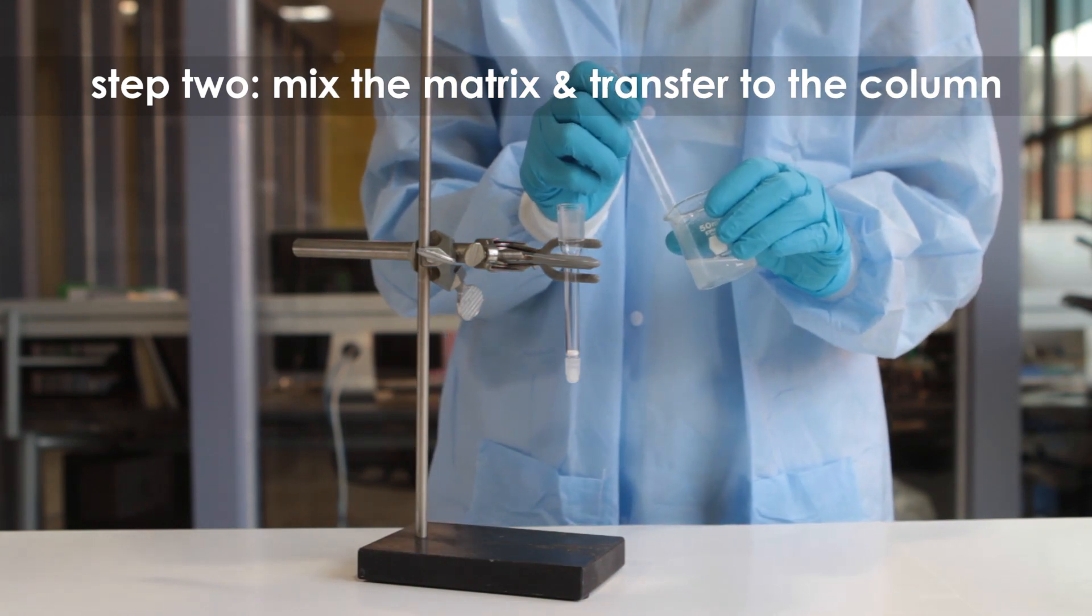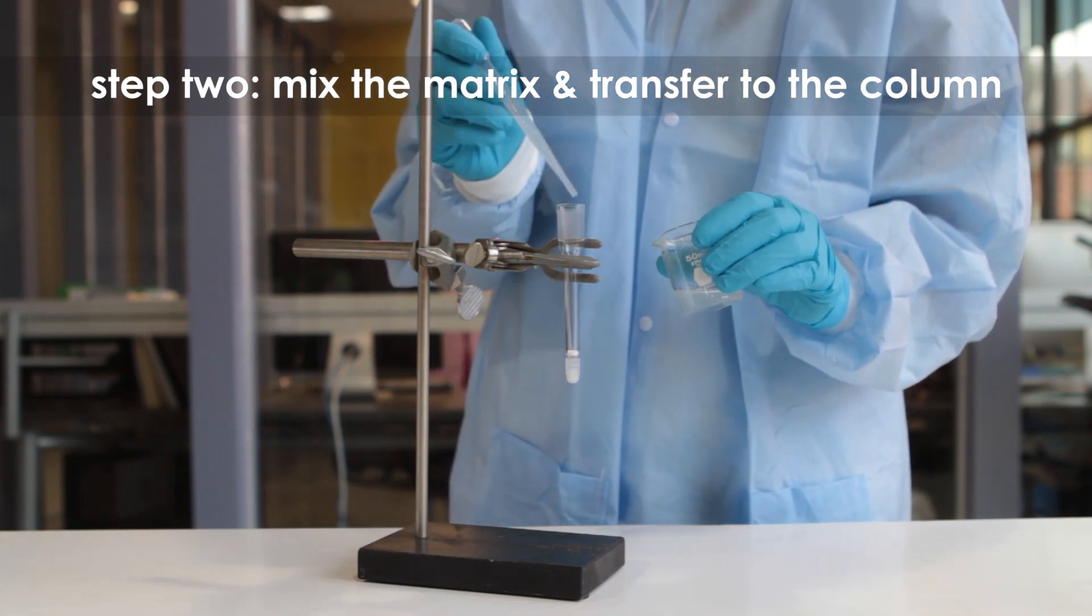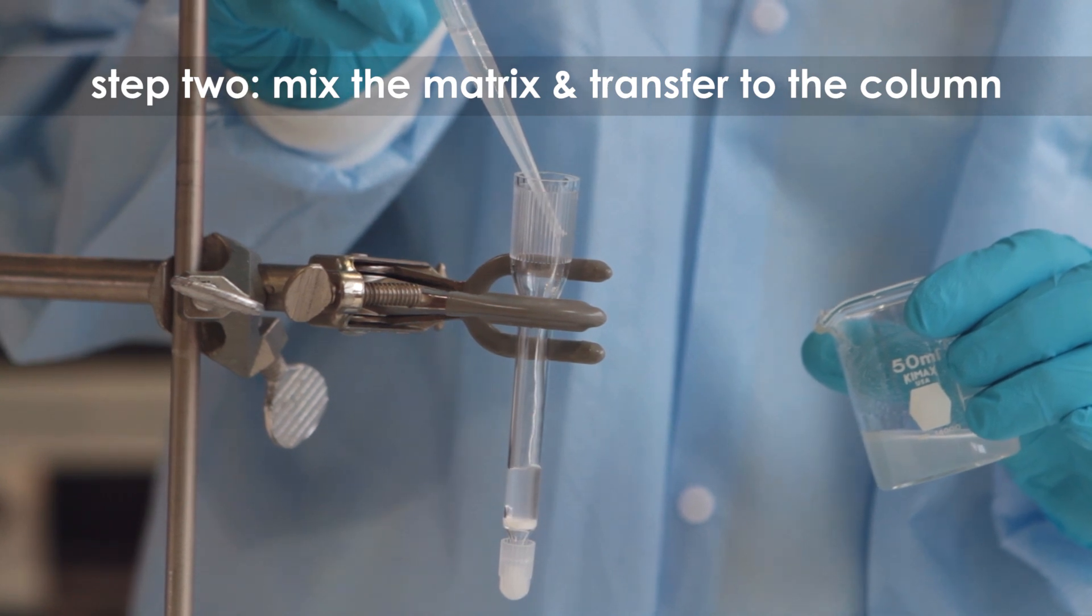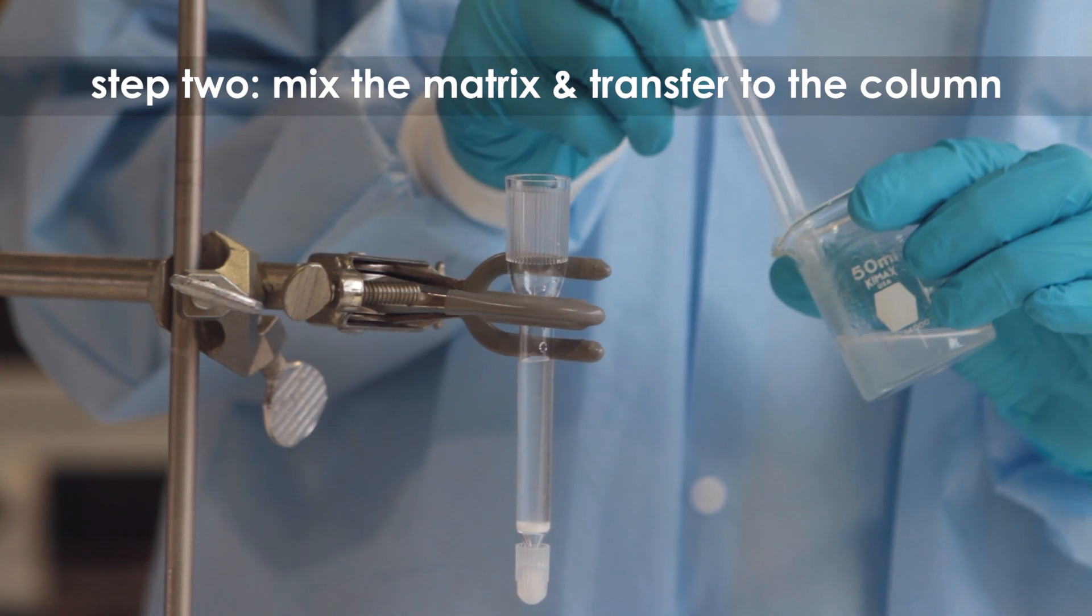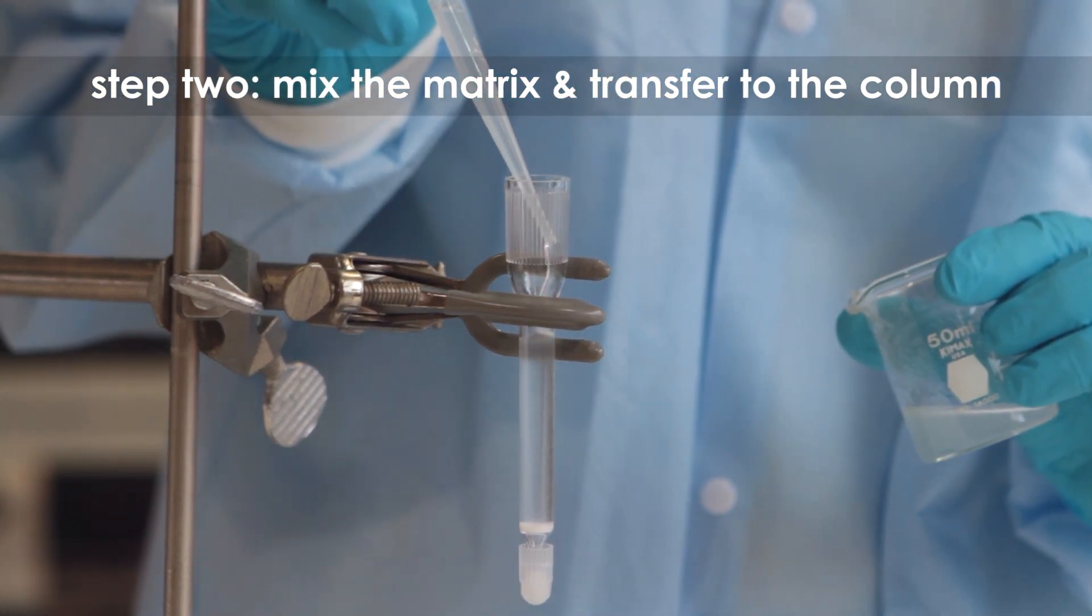Using a pipette, carefully transfer the slurry into the column by allowing it to stream down the inside walls of the reservoir. If an air bubble stops the flow of matrix, firmly tap the column until the air is removed and the slurry flows down.